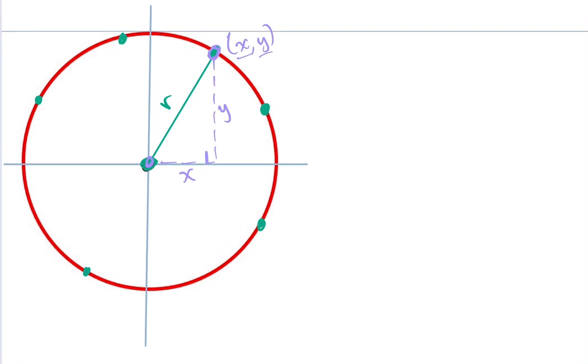These two little dotted segments I created also are perpendicular to each other, since one is vertical, one is horizontal. So I've actually created a little right triangle here.